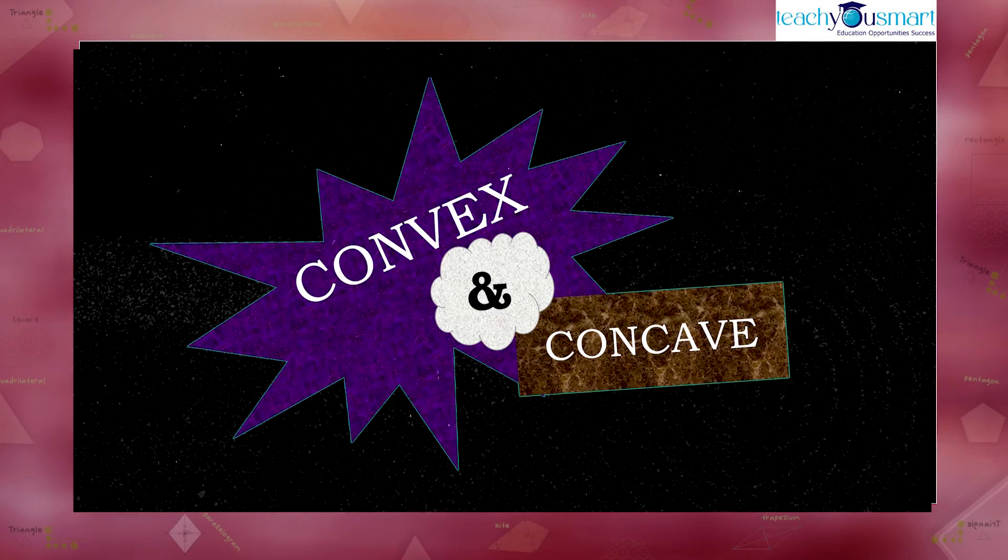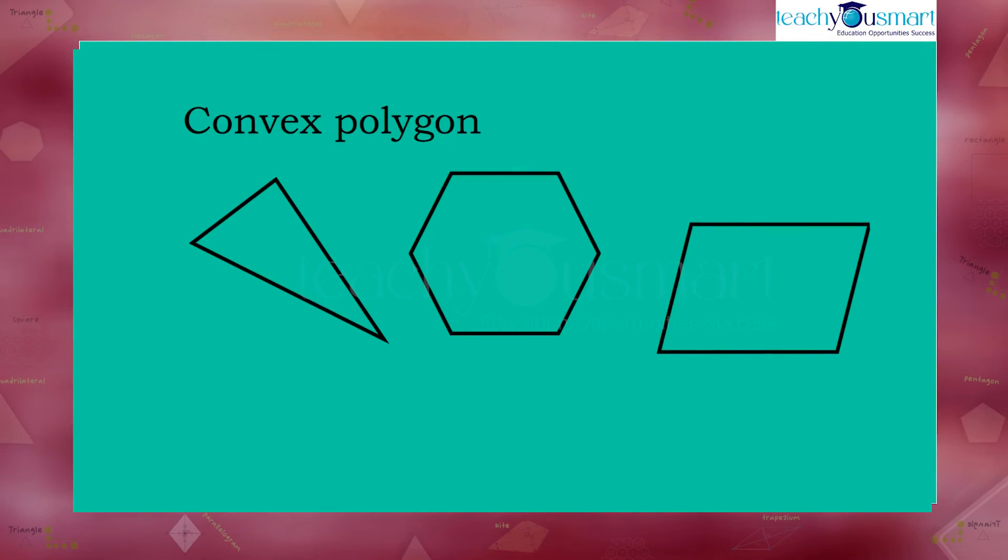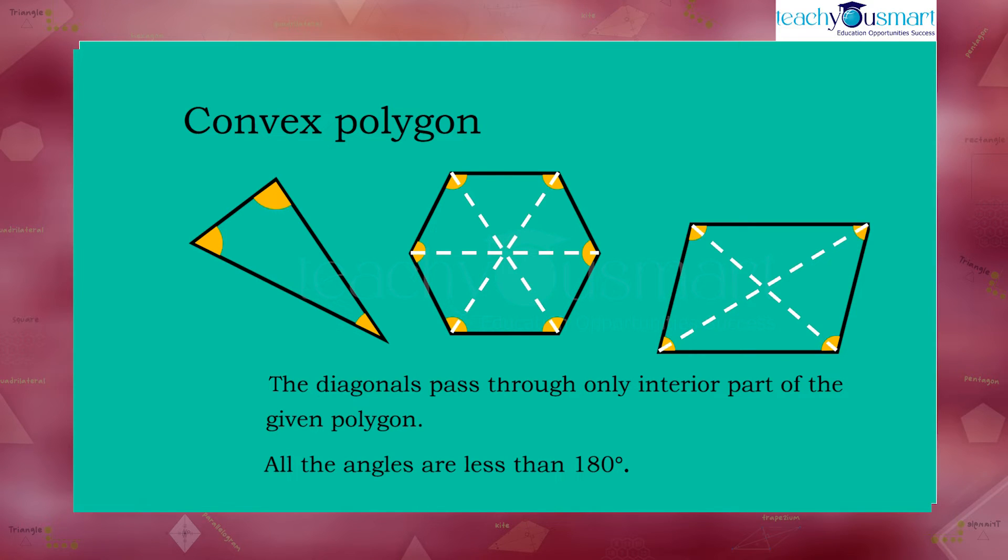In these figures, the diagonals pass only through the interior part of the given polygon. Here all the angles are less than 180 degrees. So in a polygon, if all the diagonals lie in the interior part or all the angles are less than 180 degrees, then it is called a convex polygon.